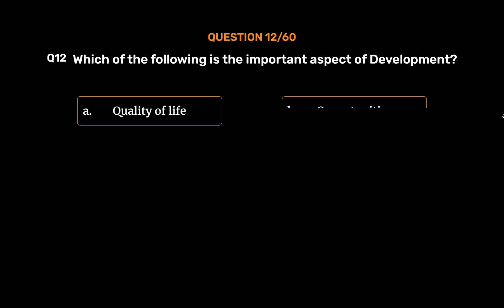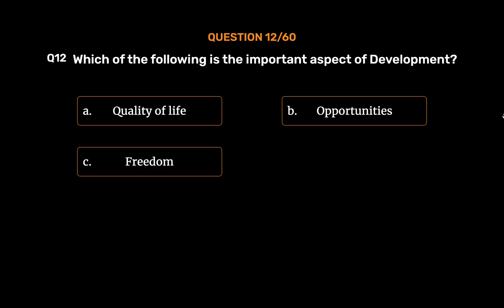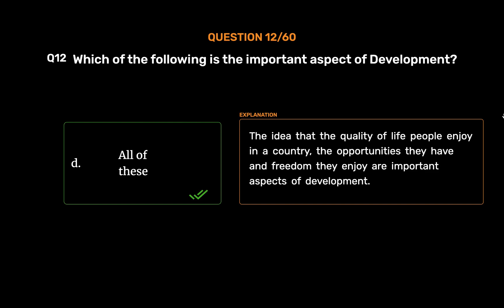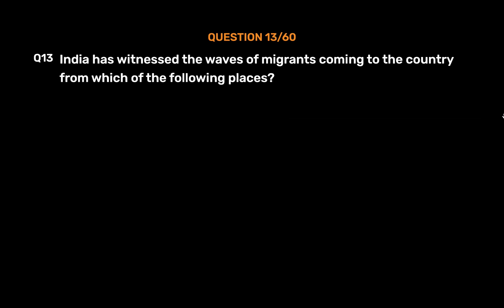Question number 12: Which of the following is an important aspect of development? Option A: quality of life, option B: opportunities, option C: freedom, option D: all of these. The correct answer is option D, all of these. The quality of life people enjoy in a country, the opportunities they have, and the freedom they enjoy are all important aspects of development.